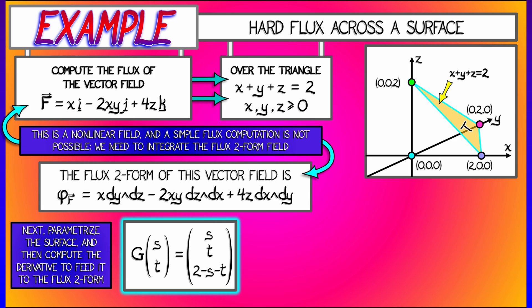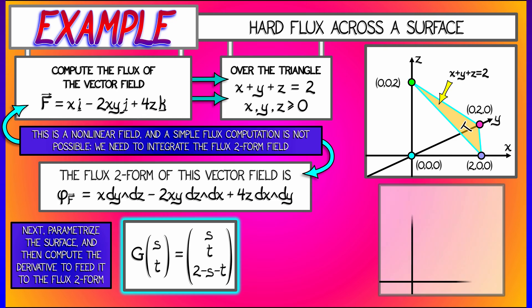So x is s, y is t, z is 2 minus s minus t. In this case, we need to specify the bounds on s and t. This is going to be a simple triangle in the st plane.